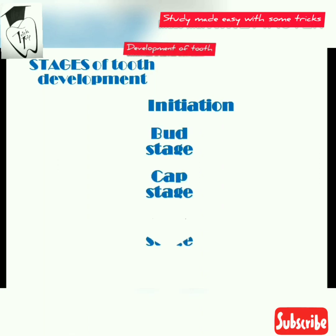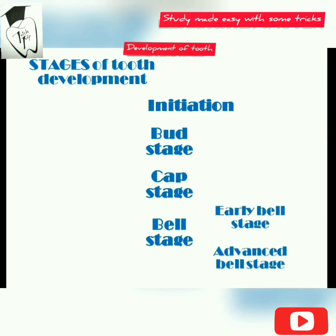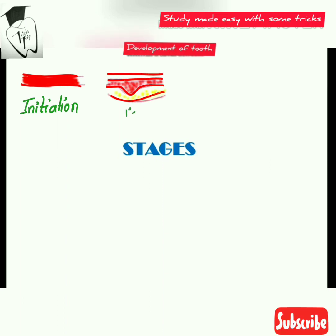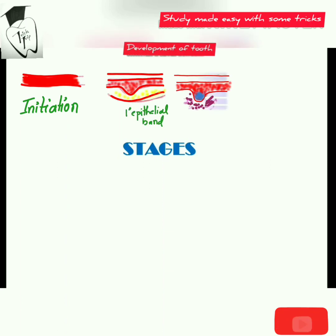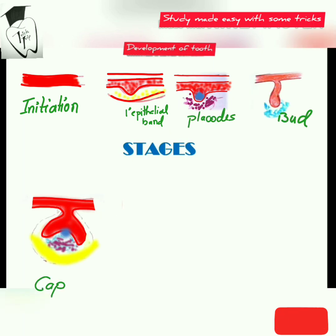The bell stage is again divided into early bell stage and advanced bell stage. Here is the diagrammatic view of the stages: the first is initiation, where the primary epithelial band forms and how the placode formation occurs, then bud stage and cap stage.